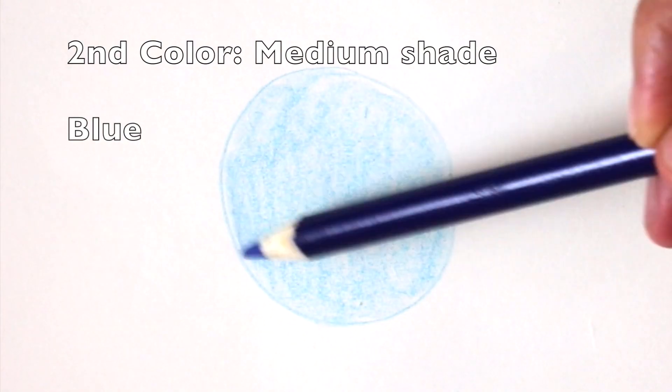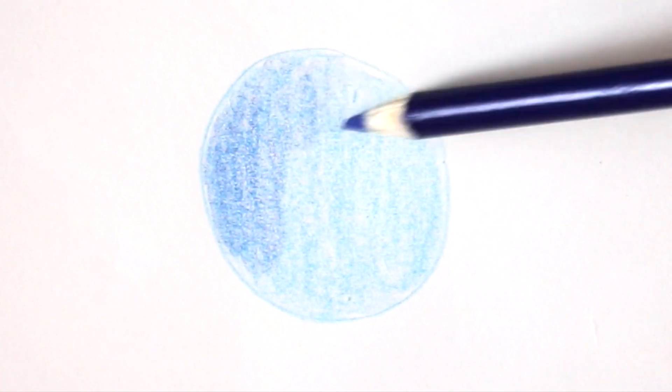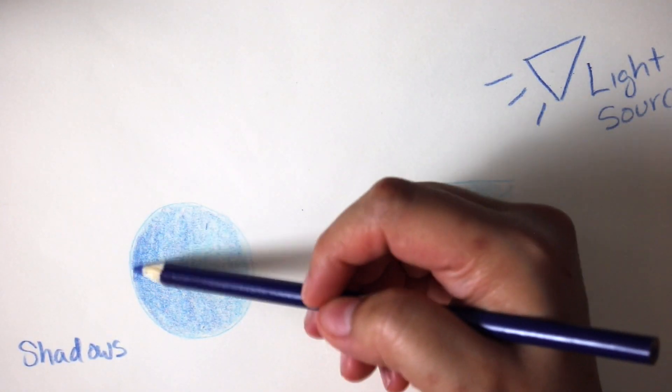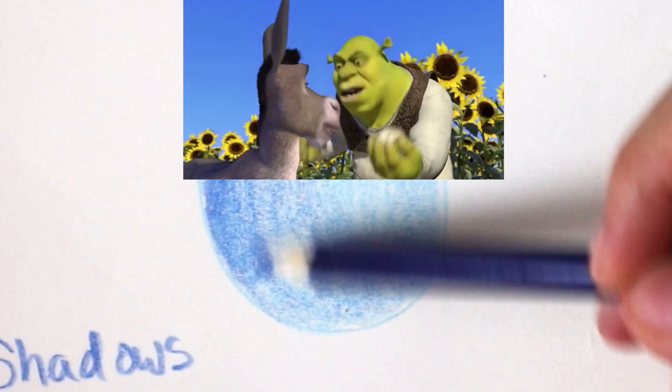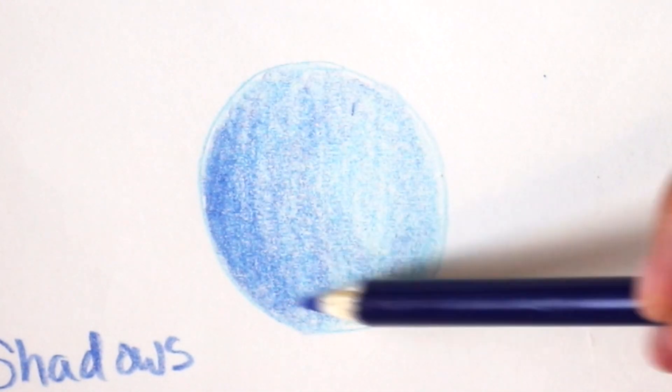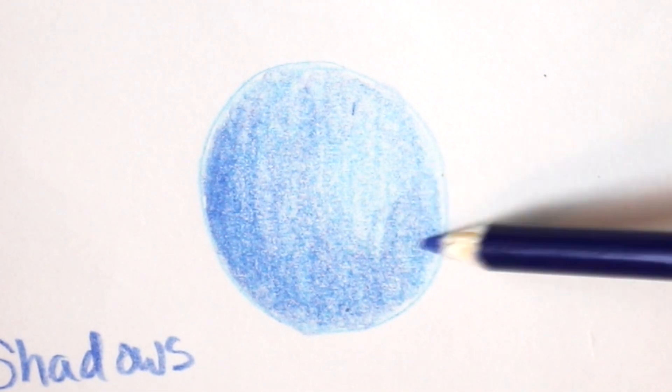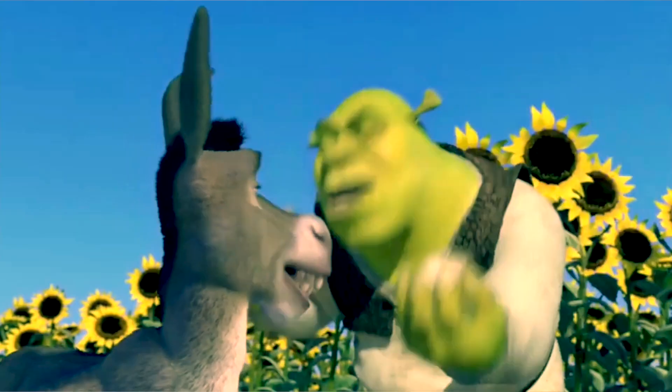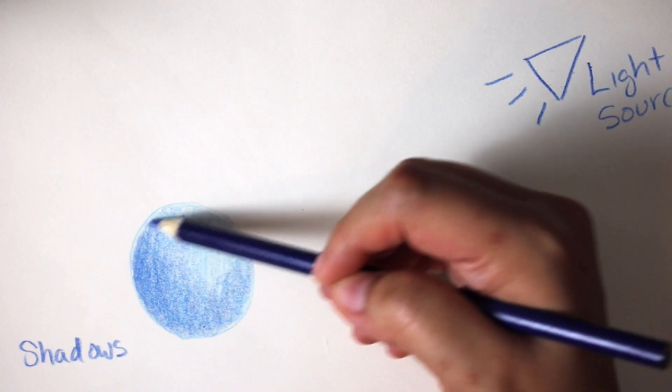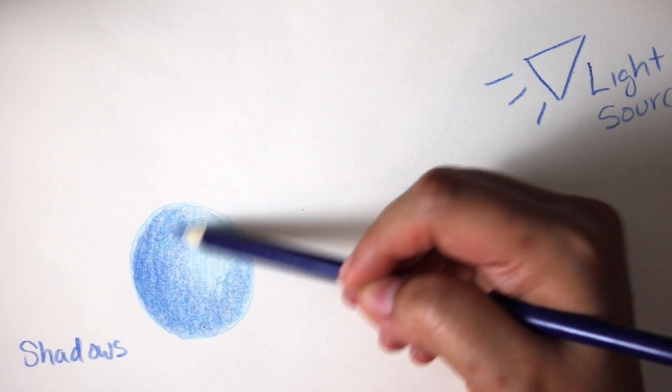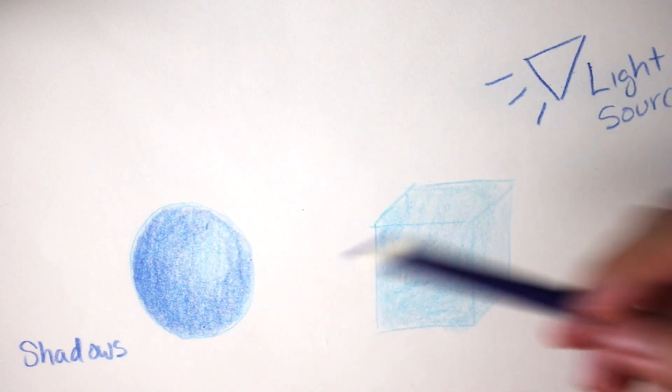Once you finish coloring with the light shade, grab the medium shade and very lightly start coloring in where the shadows are going to be. Also very important when shading with color pencils: layers are important. Start off lightly and then little by little keep adding more layers. Don't just automatically put a lot of pressure and darken it up, because otherwise your colors won't blend correctly.